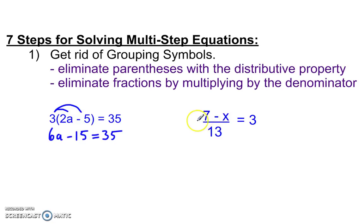Get rid of grouping symbols over here. I can multiply by the denominator. So multiply by 13 on each side. Cancels out the denominator. 7 minus x is equal to 39. That was step 1. Step 2.